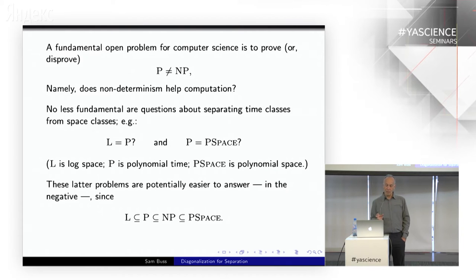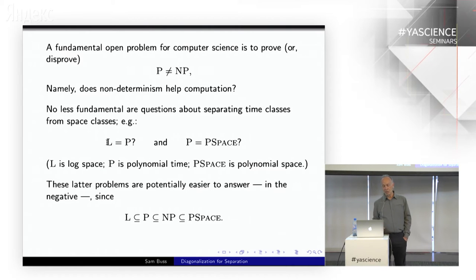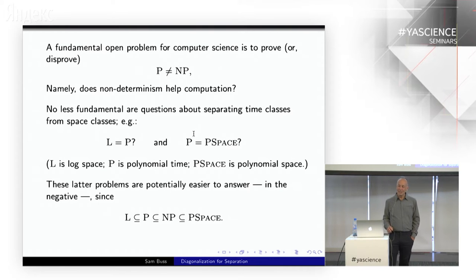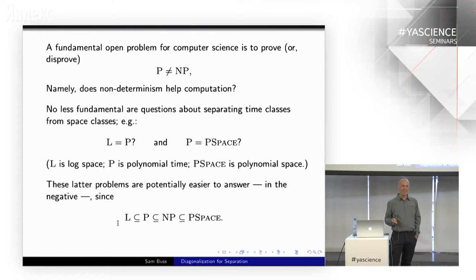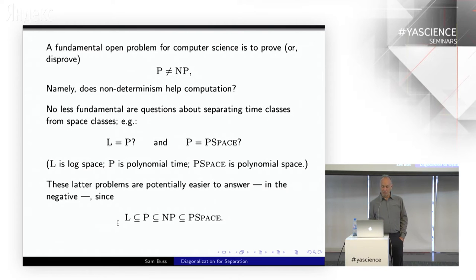There are other very important questions, like whether log space equals P — L is log space, P is polynomial time — or whether polynomial space is equal to polynomial time. These are equally important, and maybe should be studied even before P equals NP. We have the hierarchy: log space is a subset of polynomial time, a subset of NP, a subset of P-space. So if you're trying to prove separations, it would be easier to separate P from P-space, or L from NP, because P not equal NP would already imply those separations.